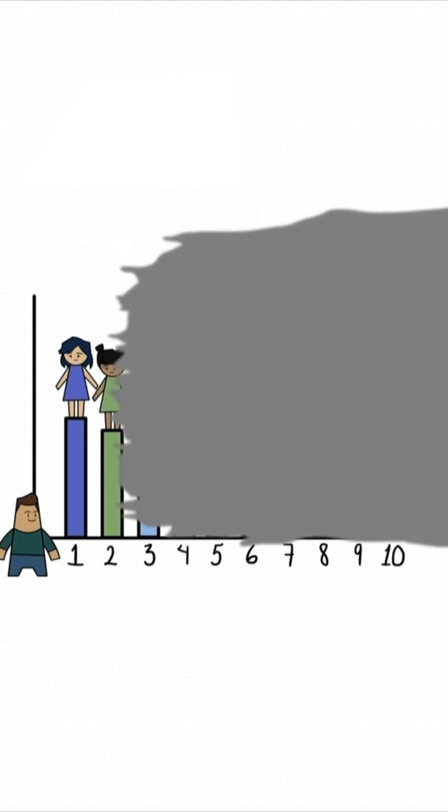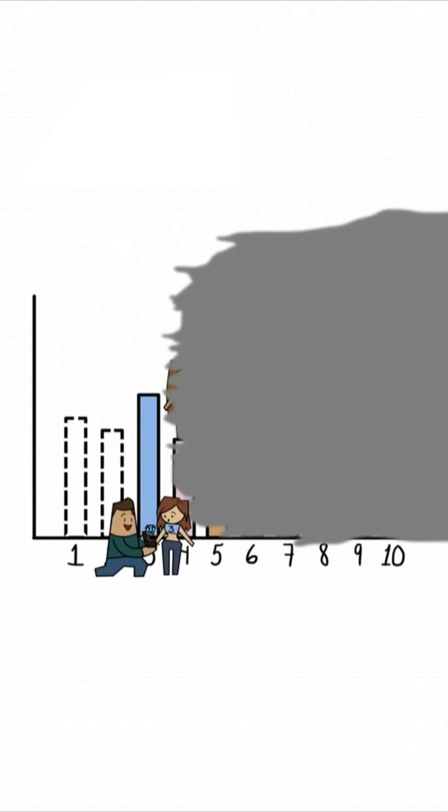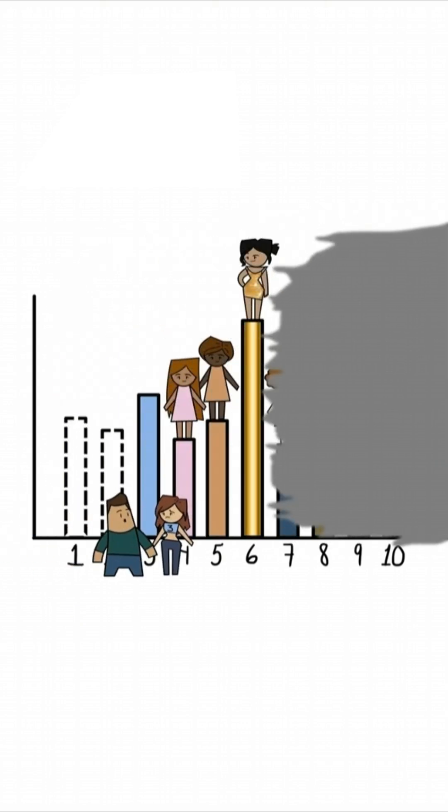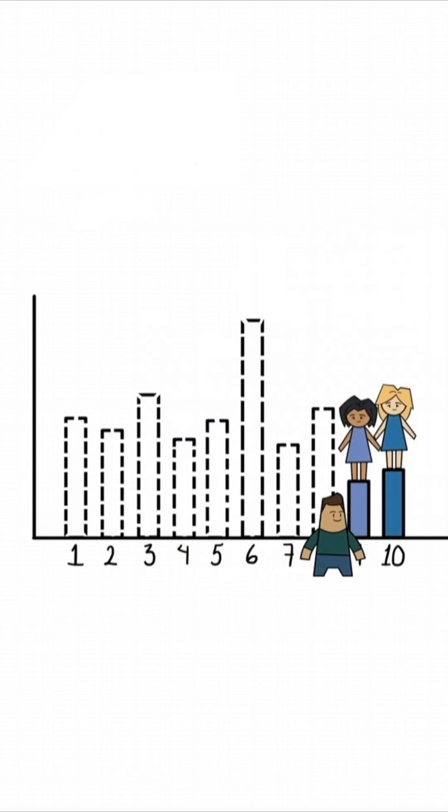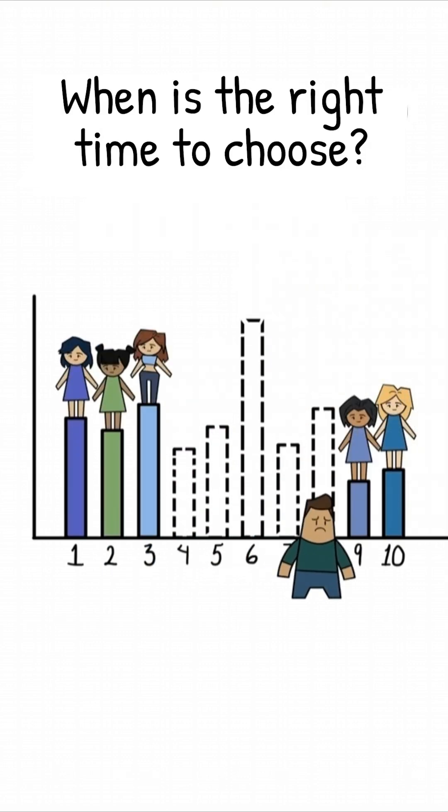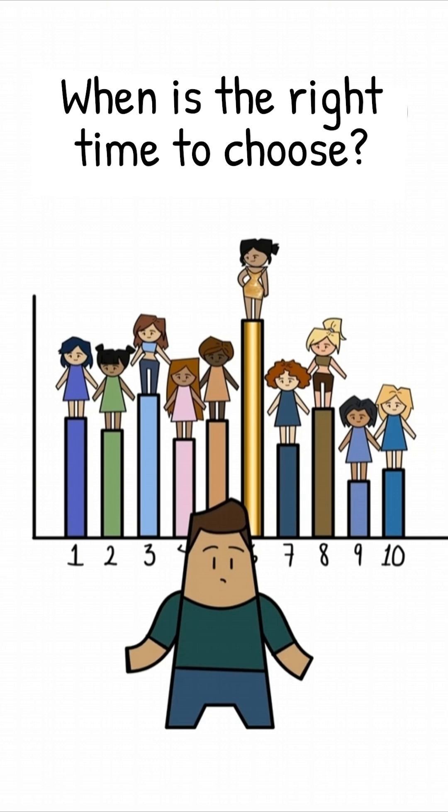The problem everyone faces is this. If you commit too early, you might miss the best person later on. But if you wait too long, you might let the love of your life slip away. So, how many people should you meet before deciding on one?